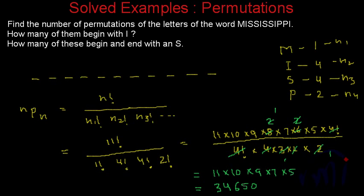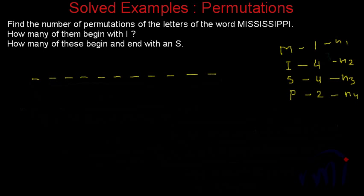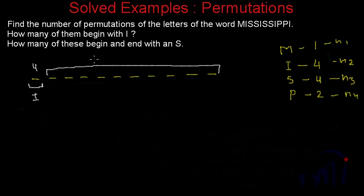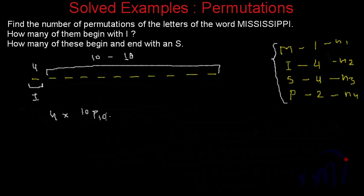That was part 1. Now let's concentrate on part 2. We have to find how many of these permutations will begin with I. If it has to begin with I, this first place can only have the letter I, so this place will have 4 choices. For the remaining 10 places we have 10 letters, with the same repetition structure as before.